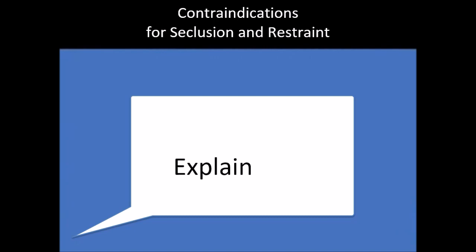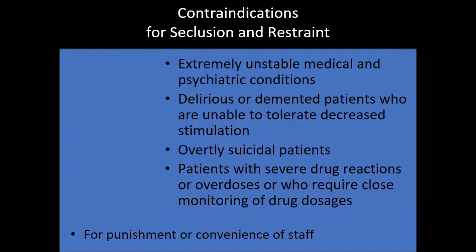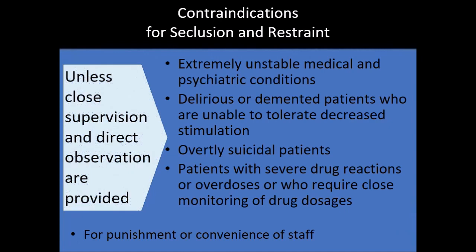The contraindications for seclusion and restraints include: if the patient has an extremely unstable medical or psychiatric condition, if the patient is delirious or demented, if the patient is unable to tolerate decreased stimulation, for patients who are overtly suicidal, and for patients with severe drug reactions or overdoses who require close monitoring. These contraindications do not mean seclusion or restraint cannot be done — it can still be done, but only with close supervision and direct observation, and it should never be done just for punishment or staff convenience.